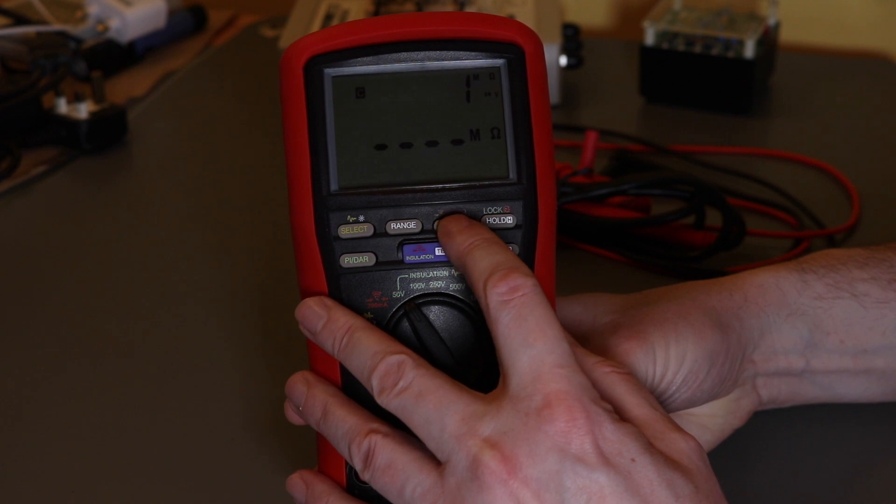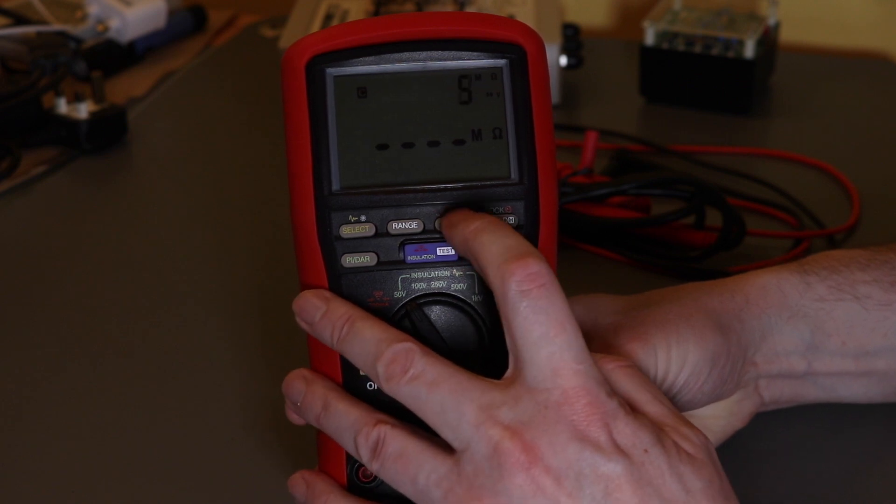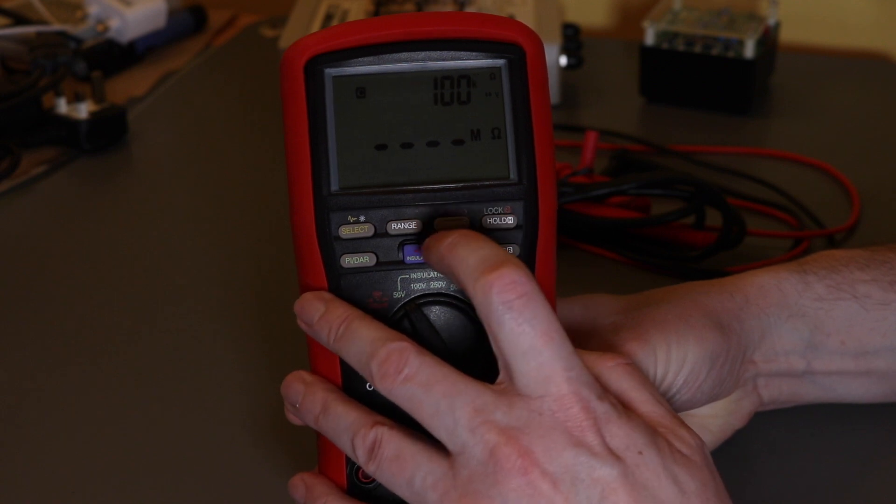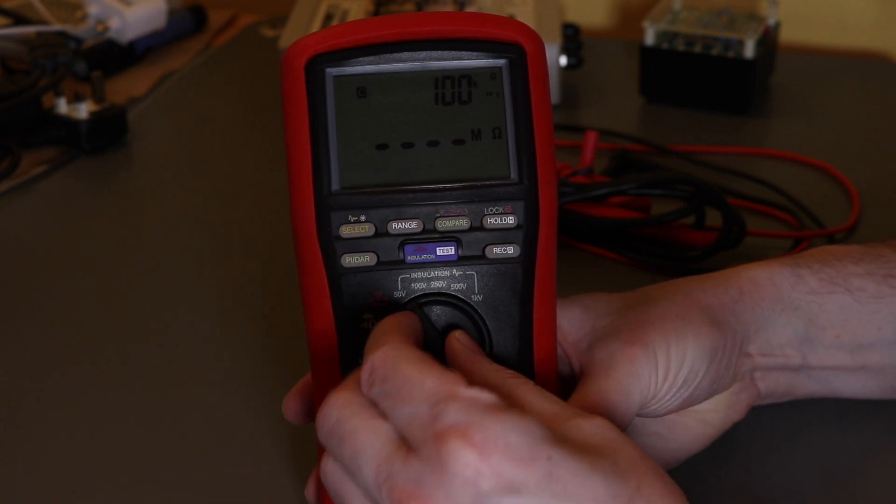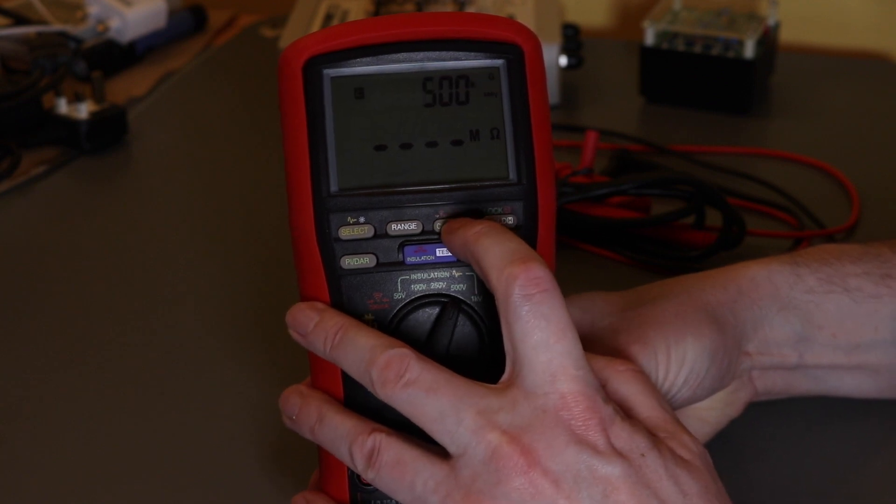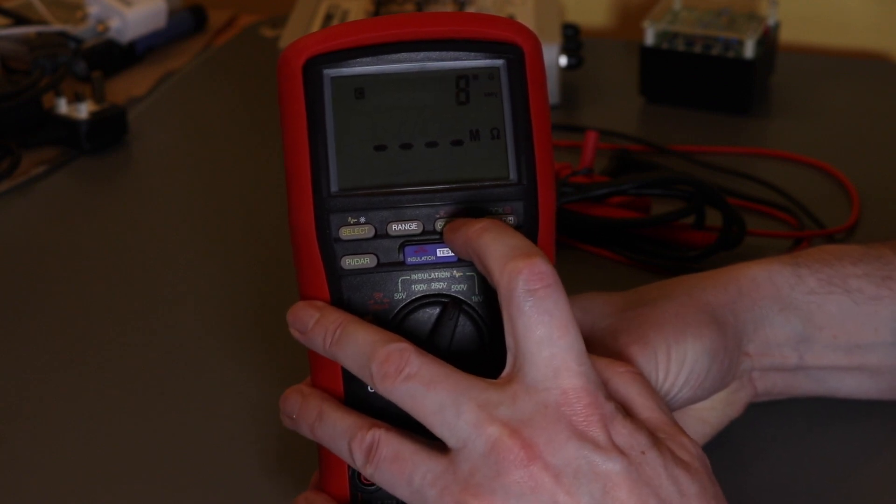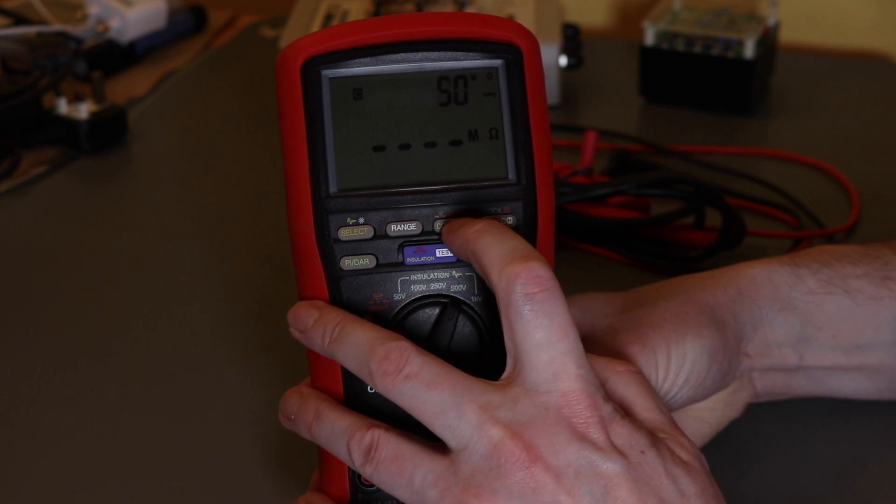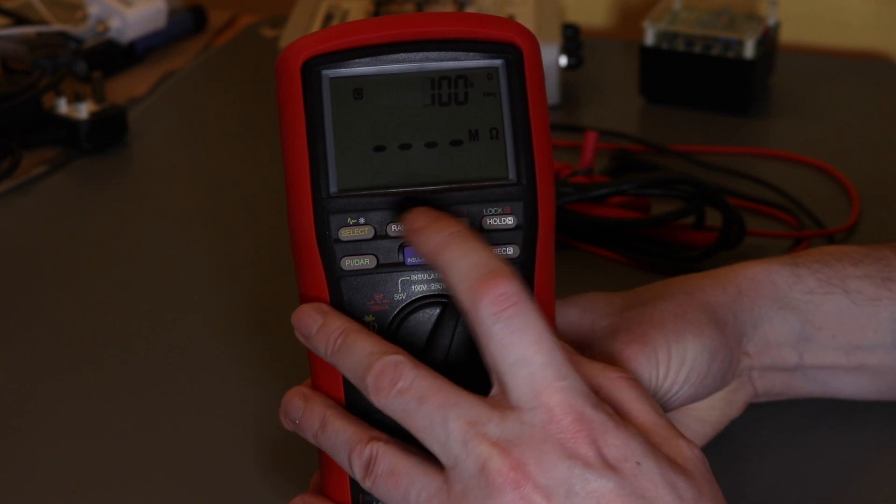All the way up to 10, 20, 50 meg, then back to 100k. Change the range and you get different selection of buttons about there: 50, then 100, 200 meg, 500 meg, and back to the 100k.